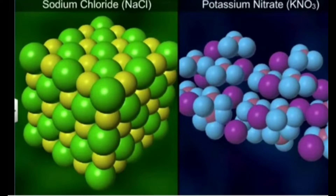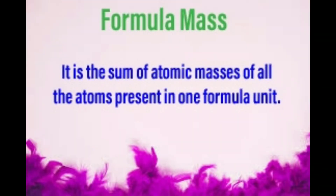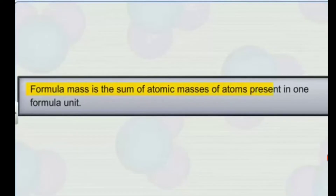Therefore, in the case of ionic compounds, instead of using molecular mass, we use formula mass. Formula mass is defined as the sum of atomic masses of all the atoms present in one formula unit. They cannot be separated — they are a giant molecule. So in one formula unit, the sum of atomic masses we calculate is known as formula mass.